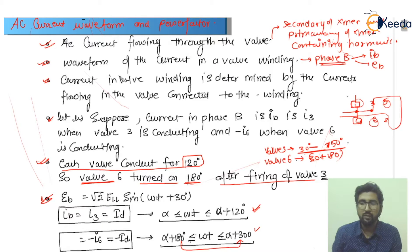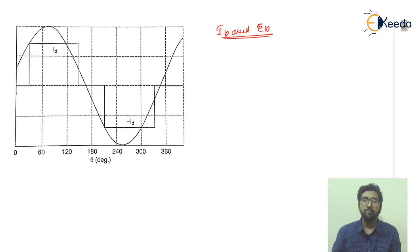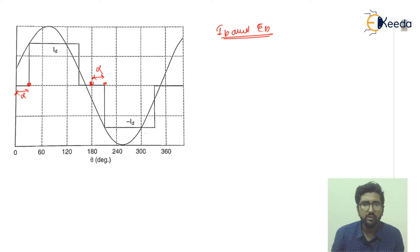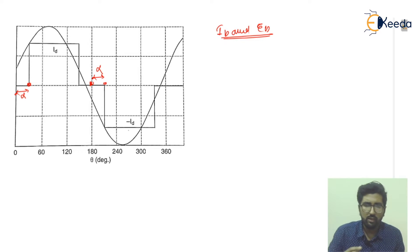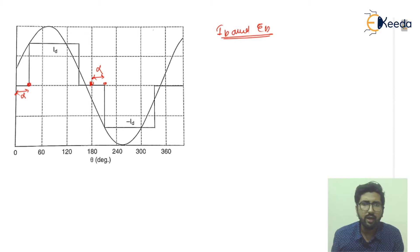Now I will talk about the graph for ib and eb. The graph shows ib and eb together. When thyristor three operates at angle α, thyristor six operates at α plus 180 degrees, as written here. We will discuss the different points and overlapping in upcoming lectures. The waveform is of this type and it contains harmonics.